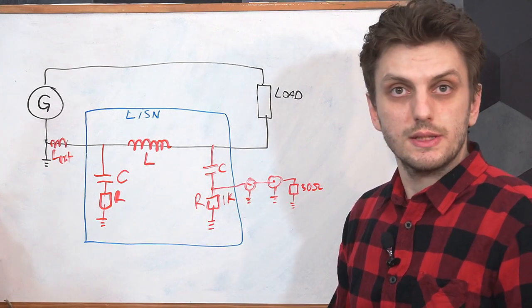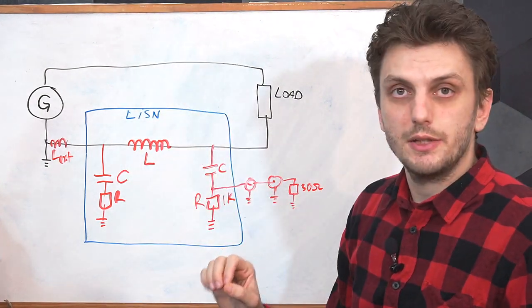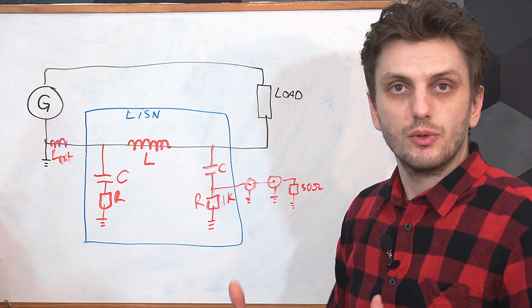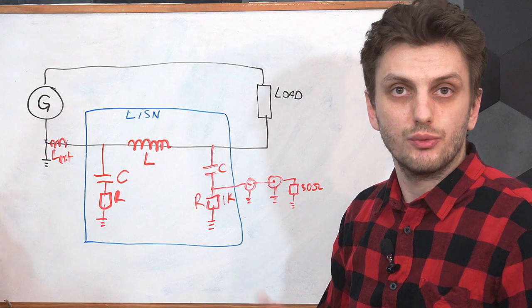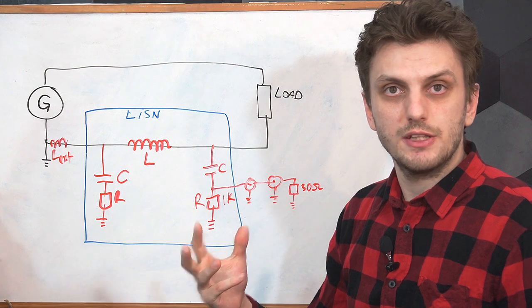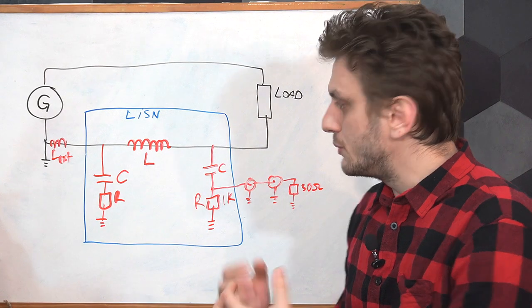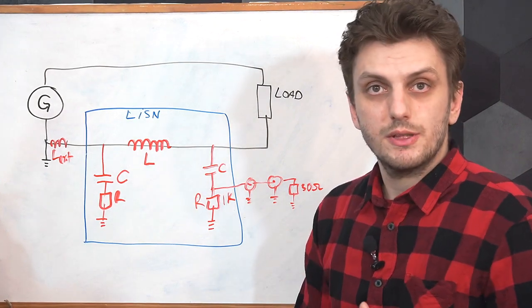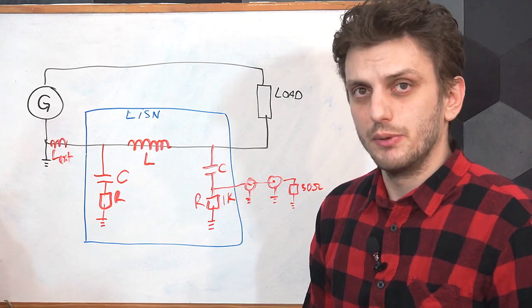And of course, you need to look at all the supply lines of your unit, so we will have another LISN also on the other supply line. And this is common for things like plus minus battery supplies or live and neutral for AC supply. And in case you have three phase supply, then all three phases will need one of these LISN networks. And basically, these are the components that you need. But of course, the real-life commercial products have a few more components than this.